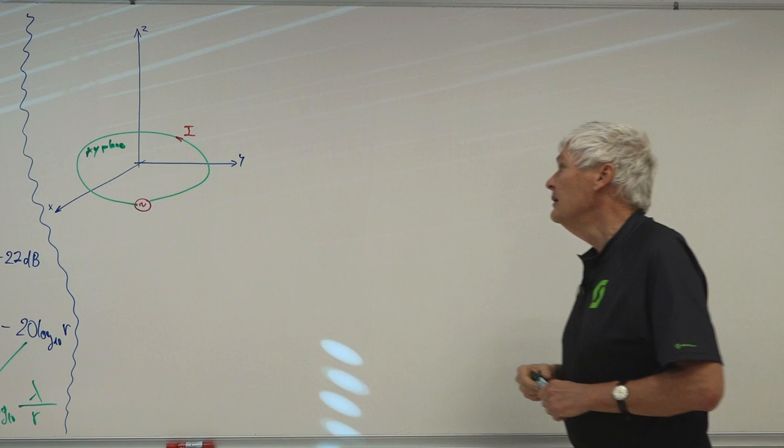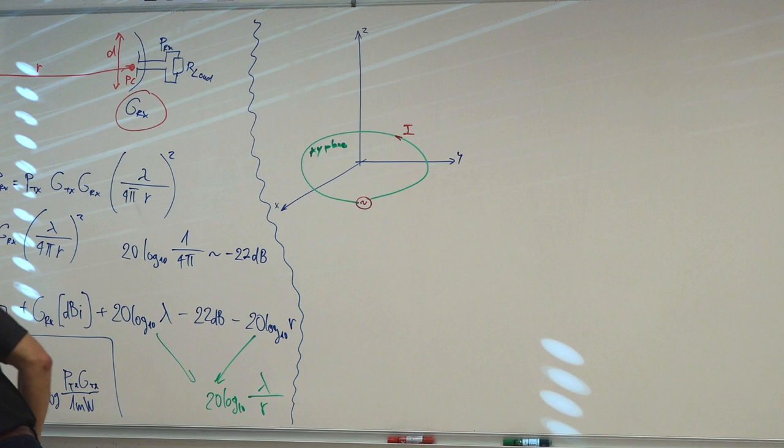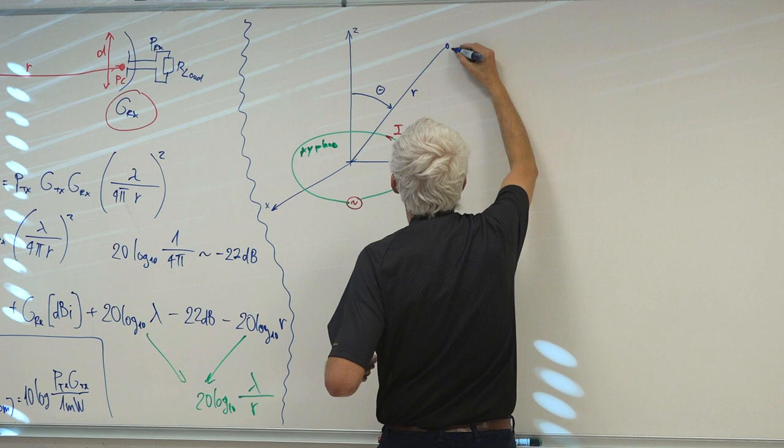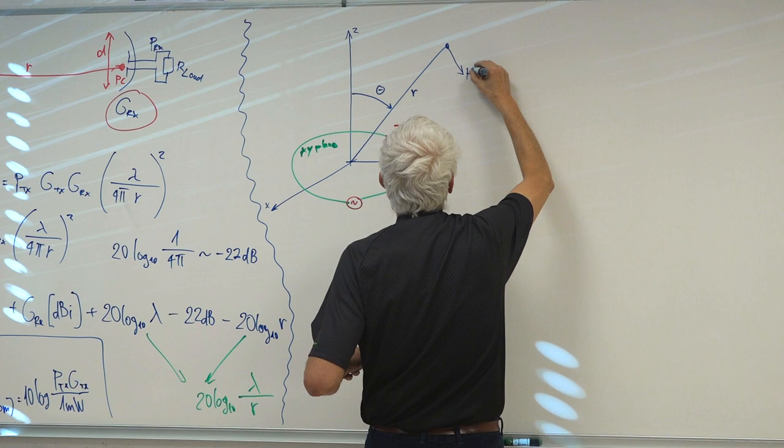How do we calculate the field at an arbitrary position r at angle θ? How do we calculate the magnetic field and the electric field of the loop?